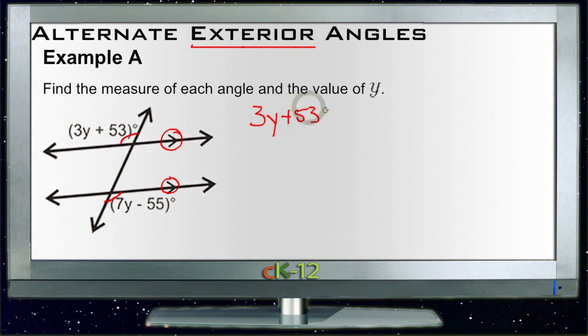So that tells us that 3y plus 53 needs to be the same thing as 7y minus 55. Now we just solve for y. We'll subtract 3y from both sides. Cancel 3y gives us 53 on the left-hand side equal to 4y minus 55 on the right-hand side.